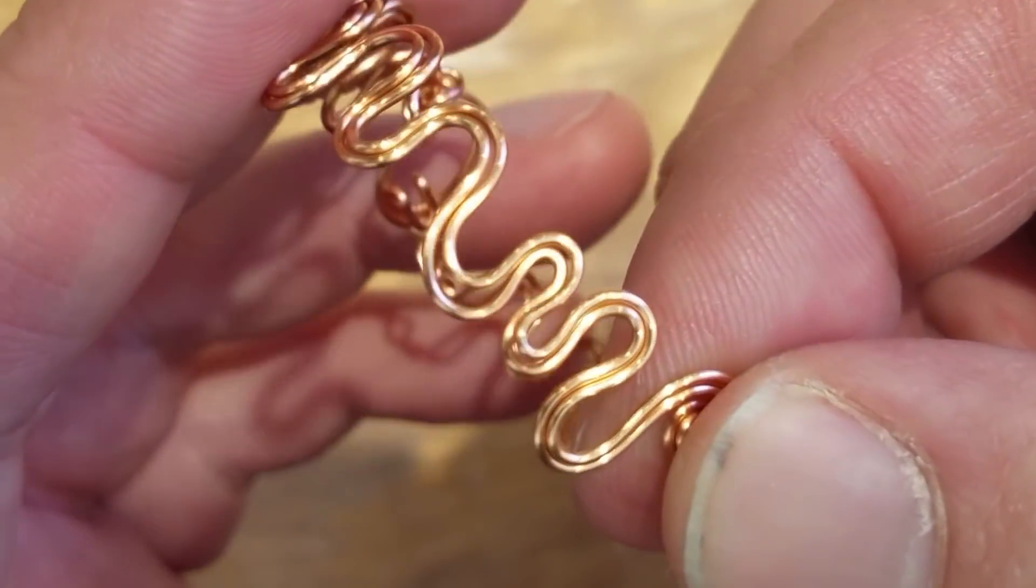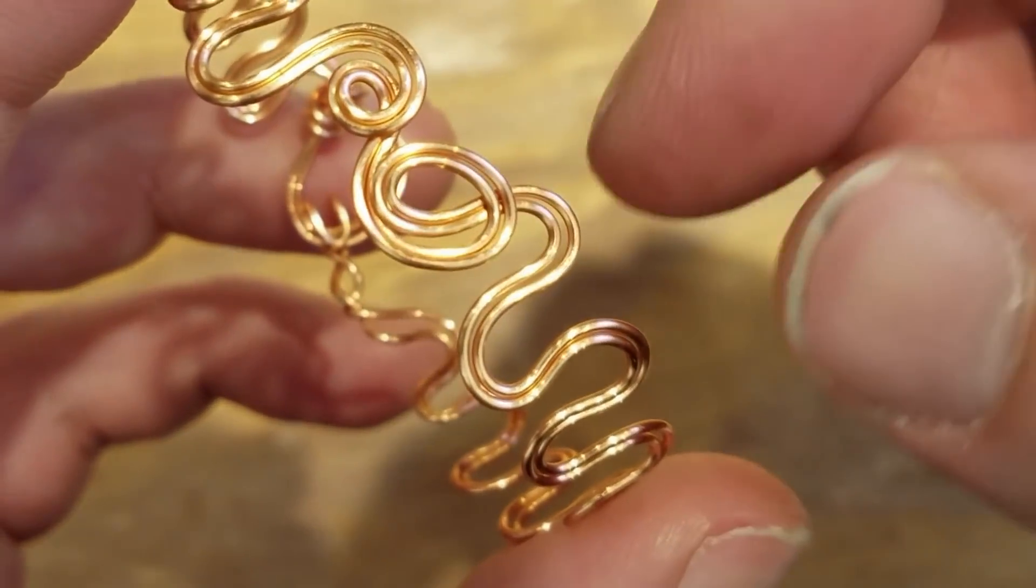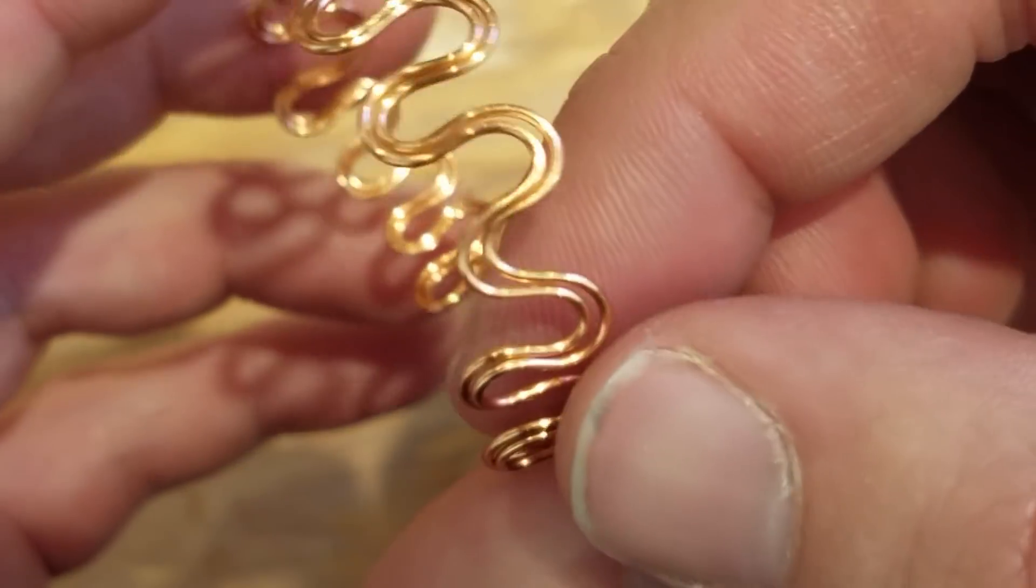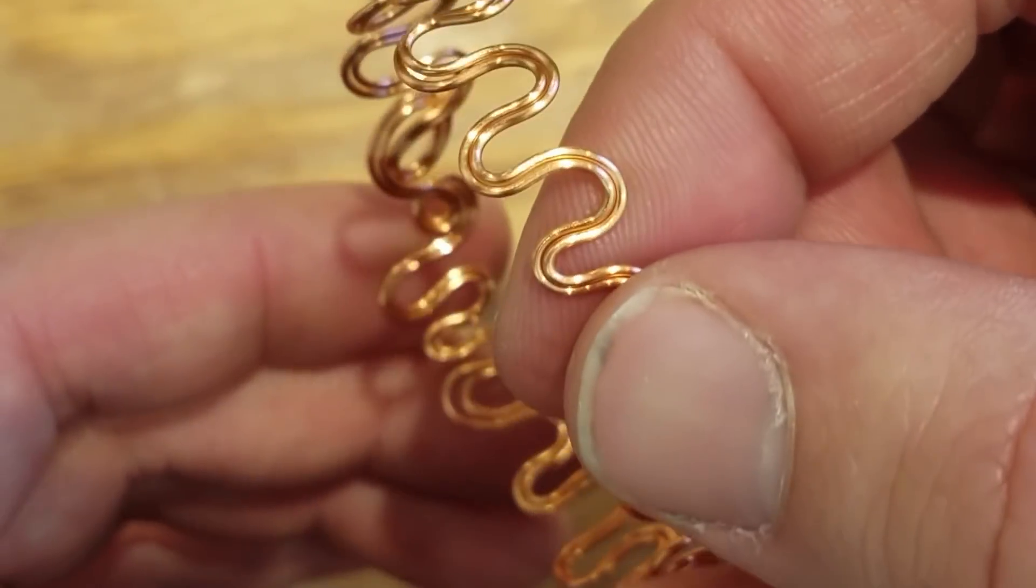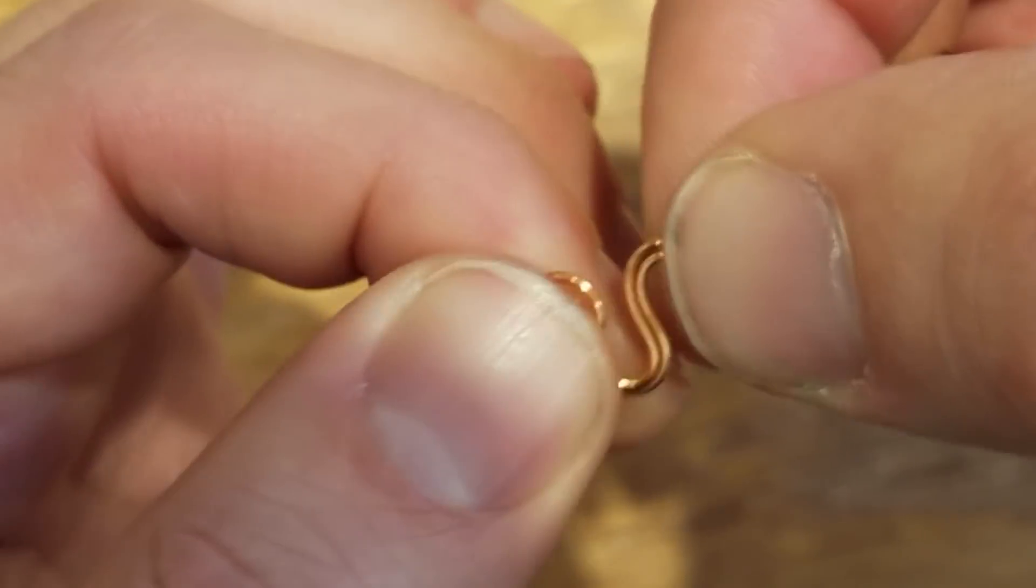Another way you can do it is just go back and forth and back and forth. I put that little two curls in the middle just to make it stronger because the back and forth tends to want to separate as you're making it. And then but this one you just again push it together to make it tighter, pull it apart a tiny bit to make it looser depending on the wrist.